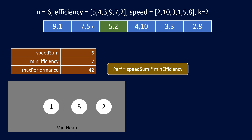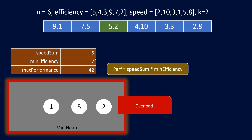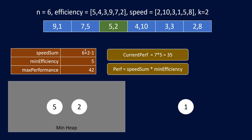Considering the next engineer with efficiency 5 and speed 2: we can't simply add this because the heap would have more elements than k. We only need to consider 2 engineers. So we add speed 2, then remove the minimum speed in the heap, which is 1. Speed sum is updated by subtracting 1 and adding 2. Minimum efficiency for this iteration is 5. Performance becomes 35, which is lower than 42, so we don't update max performance.